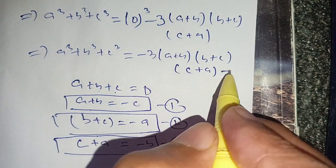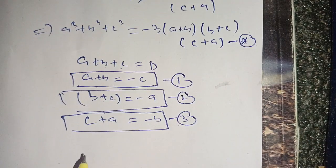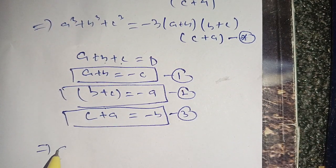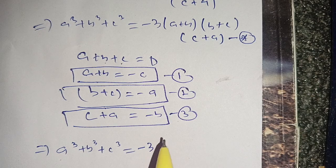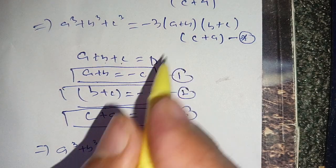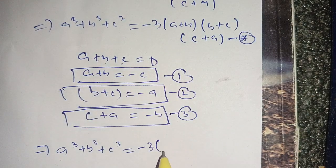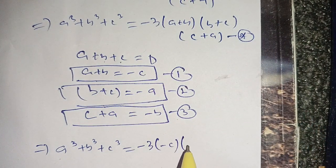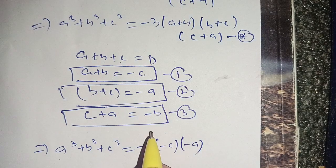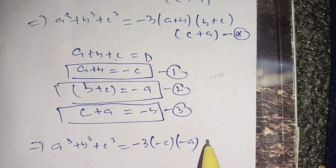So a cube plus b cube plus c cube is equal to minus 3 times: a plus b, which equals minus c, times b plus c, which equals minus a, times c plus a, which equals minus b.